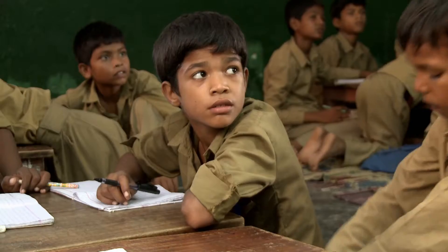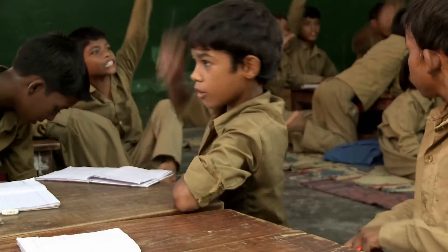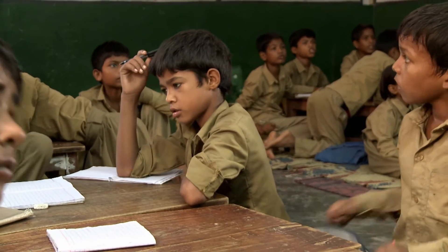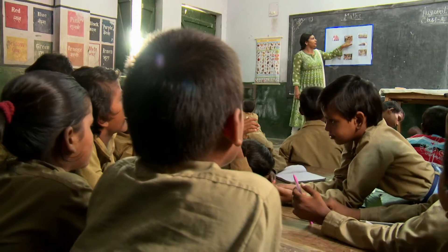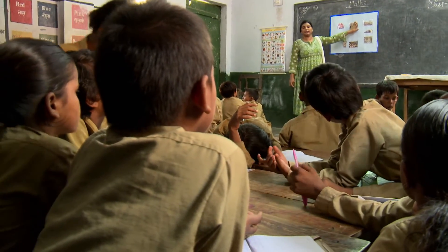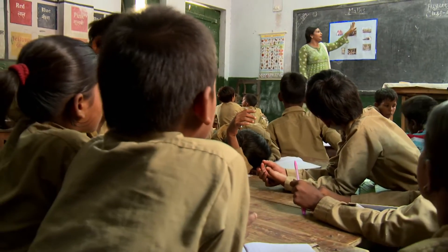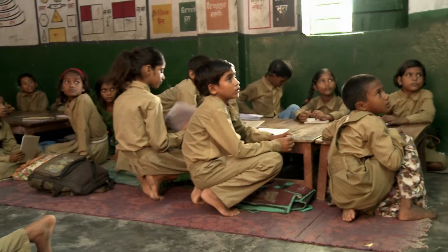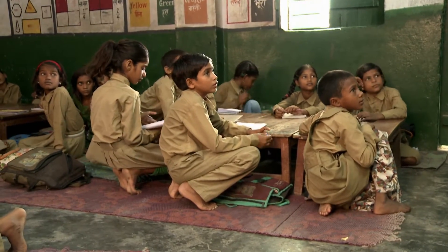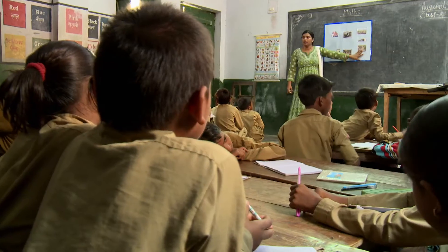The teacher asks students how much money they started with — 200 rupees. She then asks about the cost of one item, which is 100 rupees. The teacher encourages her students to remember the cost of the different items at the fair.